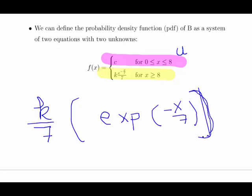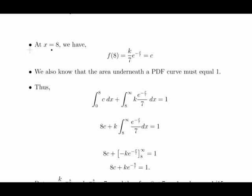This is important. We have x less than or equal to 8, and over here we have x greater than or equal to 8. In both cases we account for when x equals 8. That's intentional because they need to sync up at the junction points. At x equals 8, we have f of 8 equals k over 7 times exponential of minus 8 over 7, which equals c.